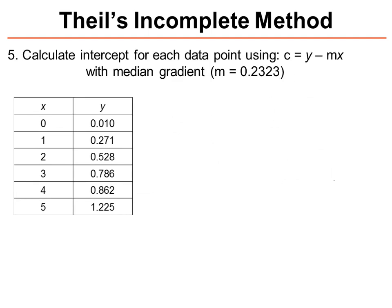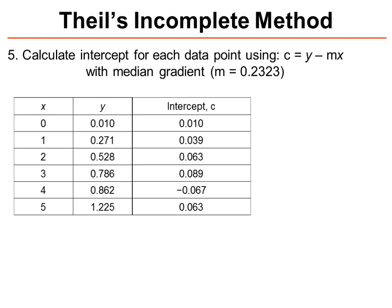Next, the fifth step is that we need to calculate the intercept for each data point. So we're going to come up with a range of different possible intercepts, and we're going to base this on the line of best fit y equals mx plus c. We need to rearrange it, and we end up with c equals y minus mx, and we use the value of m that we just calculated on the previous slide. So we can calculate a range of intercept values.